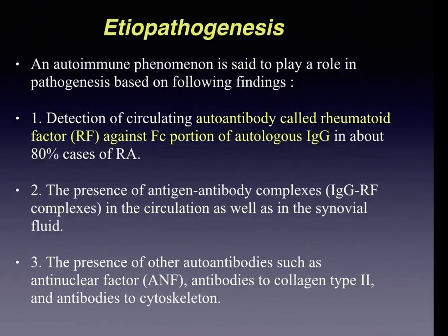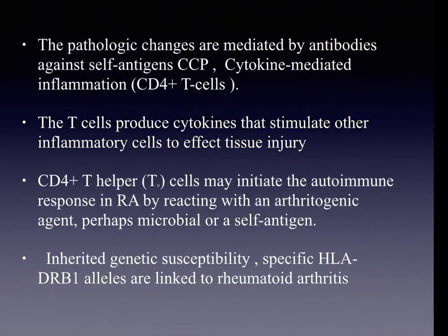T-cells produce cytokines that stimulate other inflammatory cells to cause tissue injury. Genetic predisposition and environmental factors contribute to disease progression and chronicity. Many cytokines can be isolated from inflamed joints; the most important are gamma interferon, tumor necrosis factor, interleukin-1, and interleukin-17, which are responsible for tissue injury in rheumatoid arthritis.